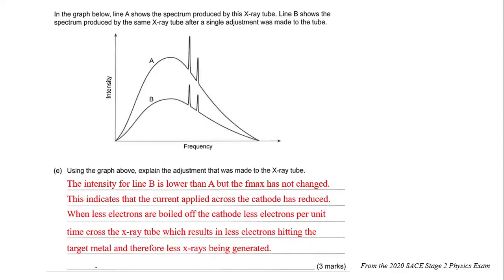There's also a key term here where I've written boiled off. That's a technical term used with X-ray tubes where they release the electrons from the cathode, and in doing so they actually heat the cathode up to make the electrons easier to release across the tube itself.